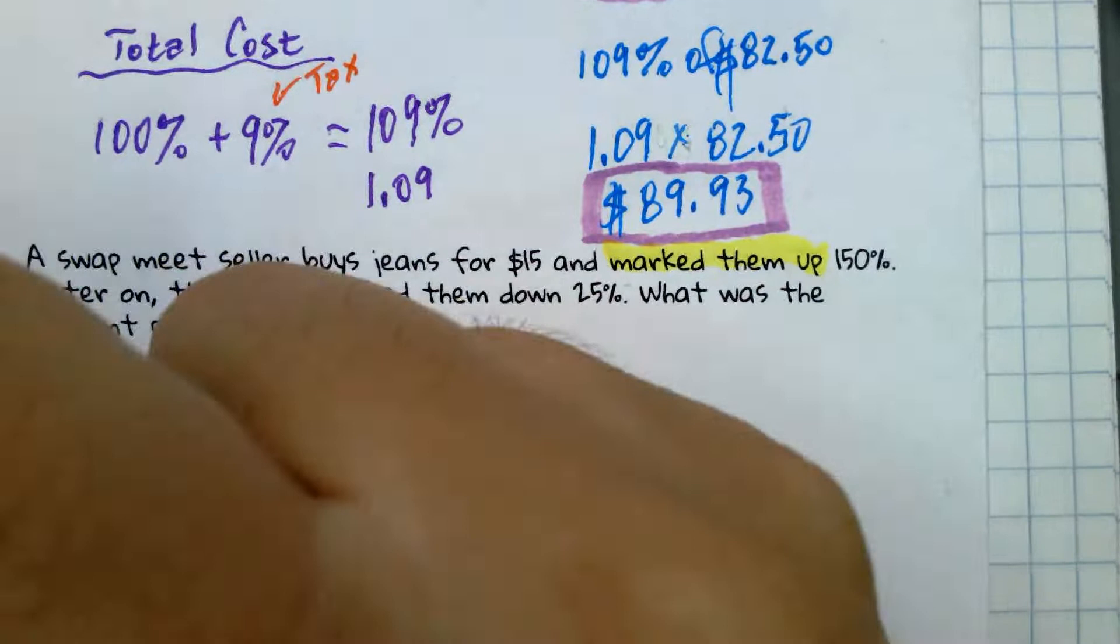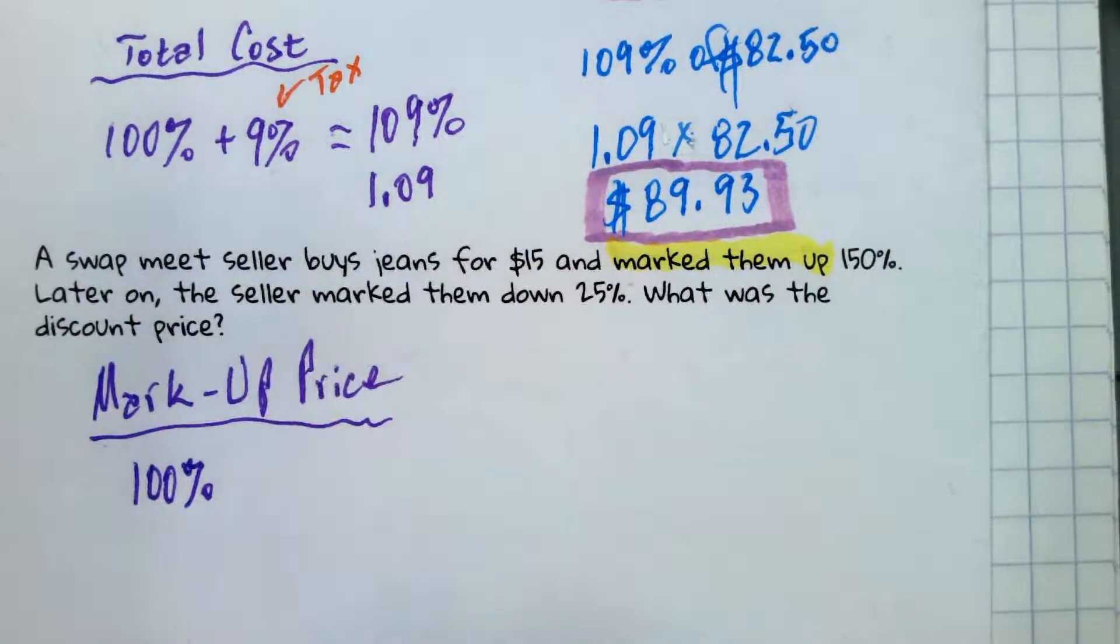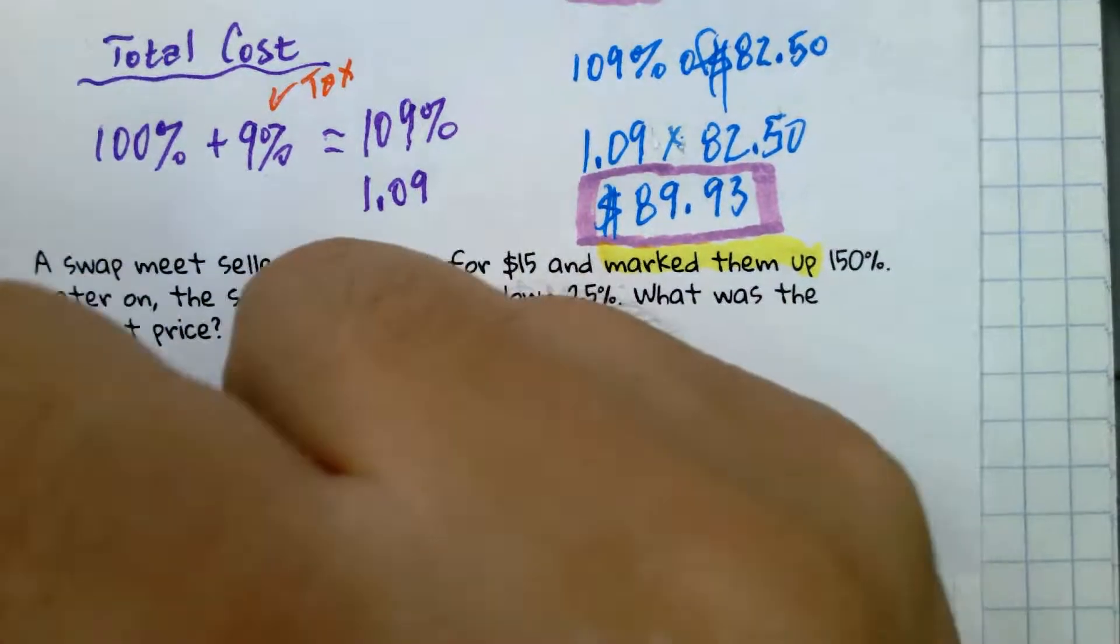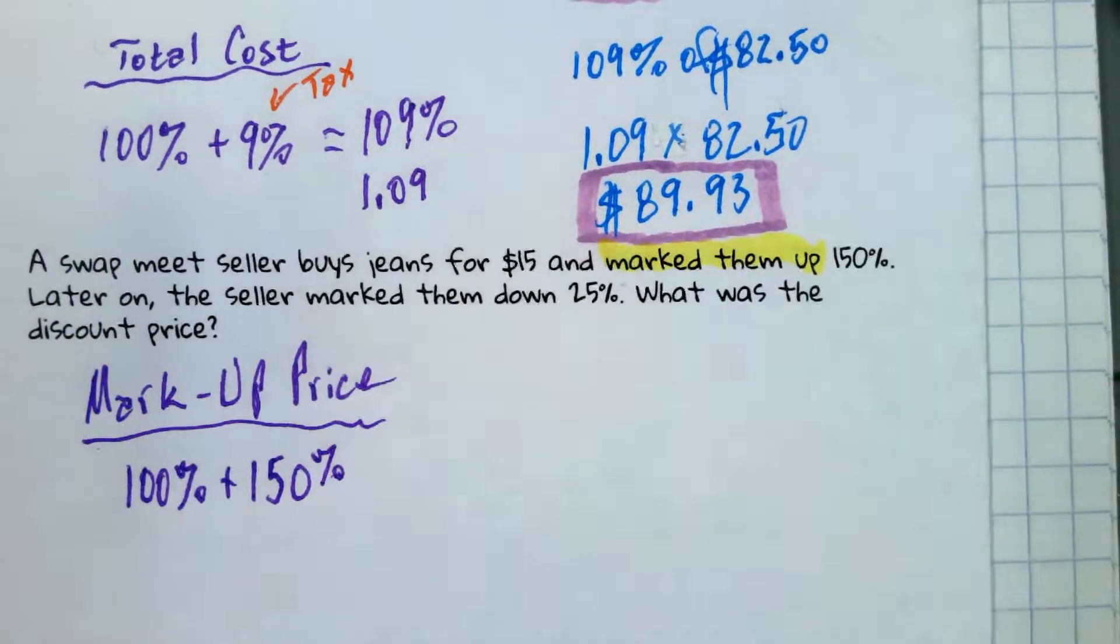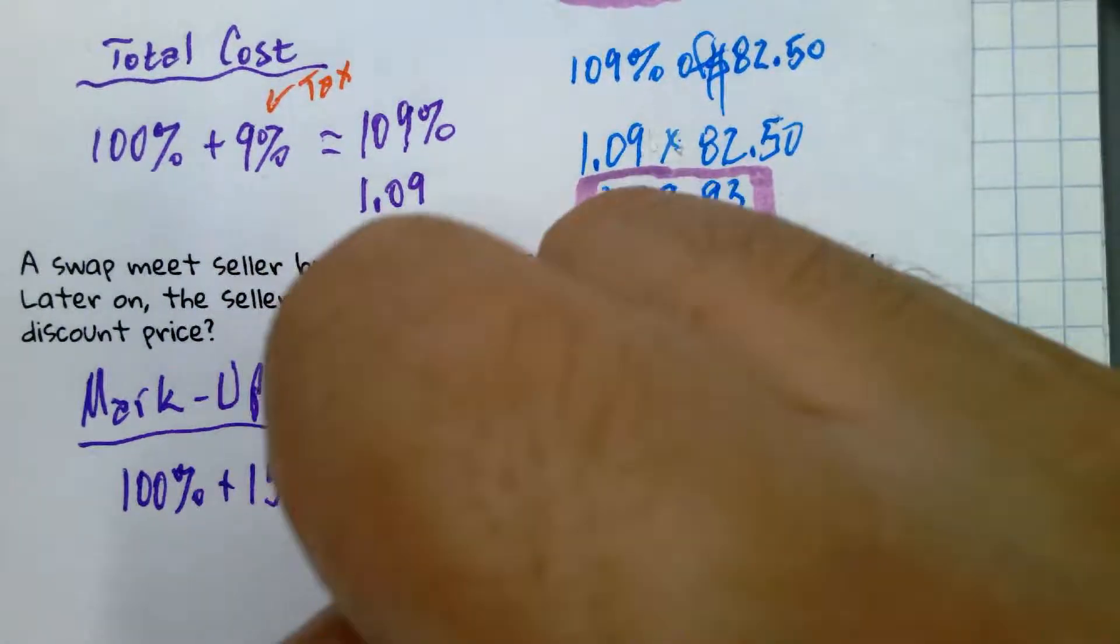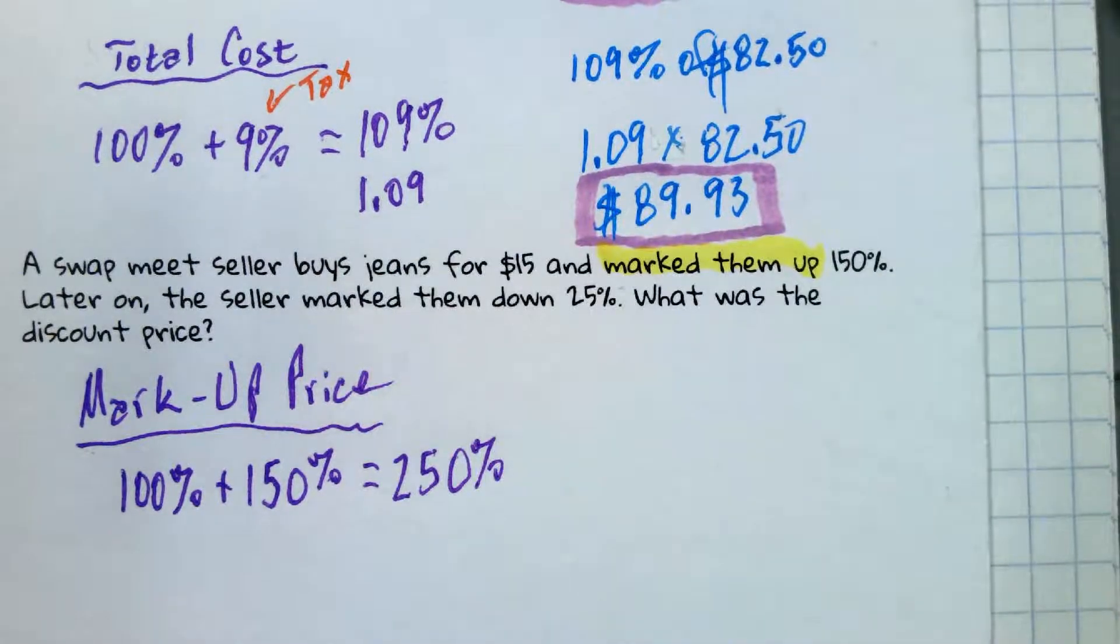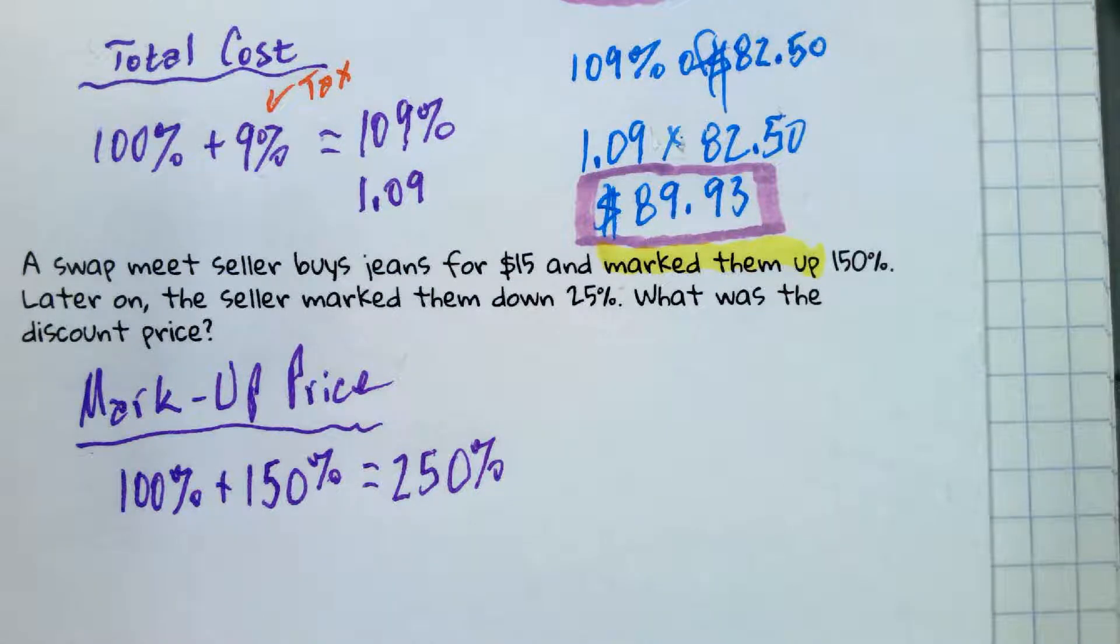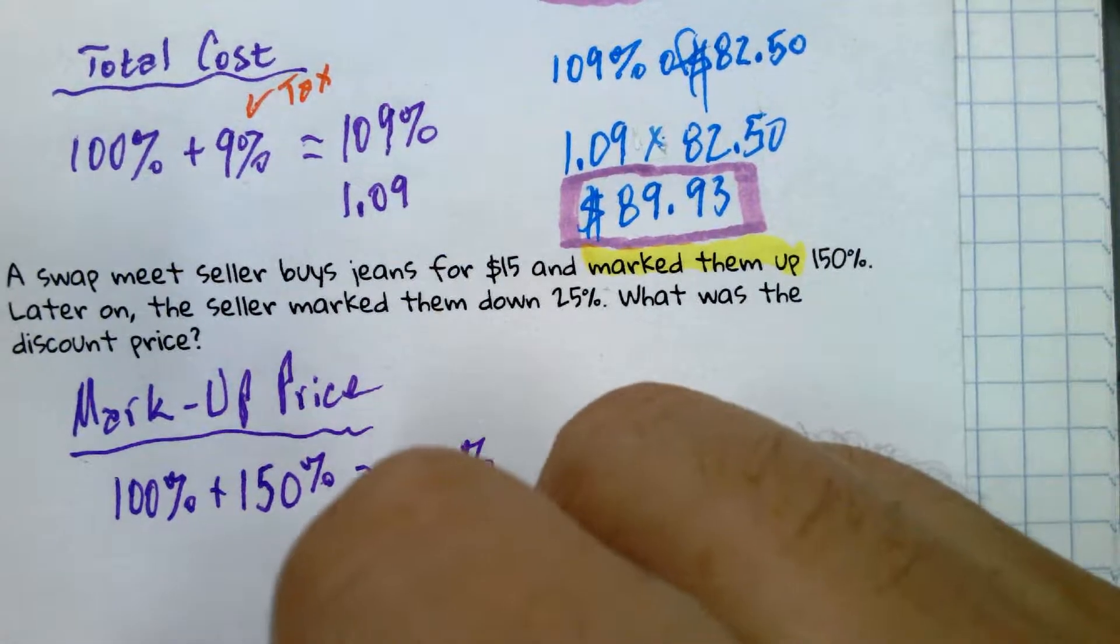It has to do with what we did in the previous example. Here we have the price, the full price. You're already doing it in your head, right, adding the 100. The 100%, which is the full $15, plus the 150% you want to add. That's 250%. Marking it up 150% basically is you want 250% of the original price. So that turns out to be, as a decimal, 2.5.